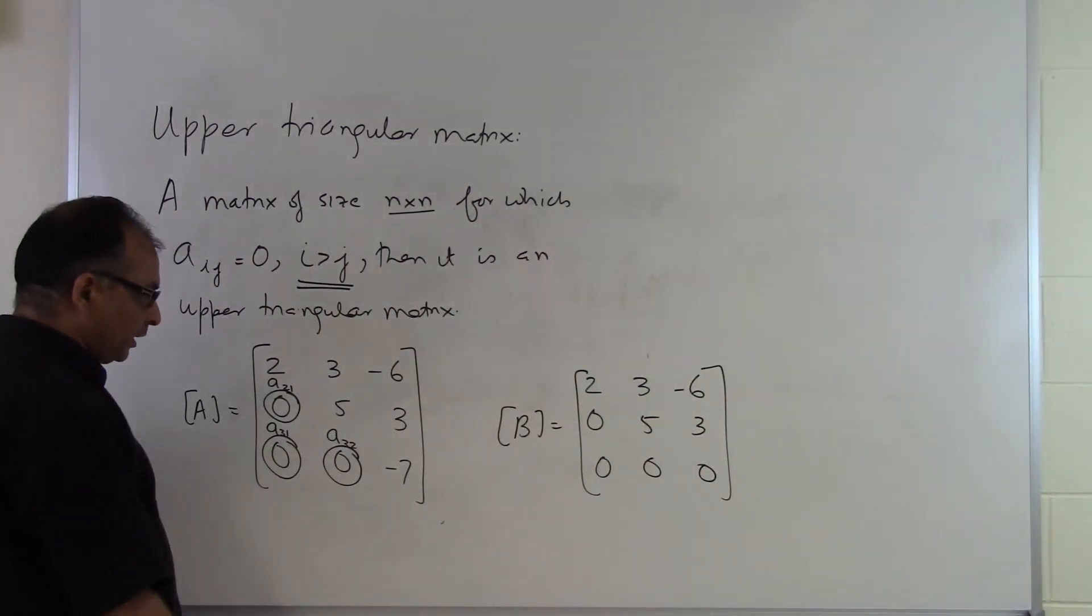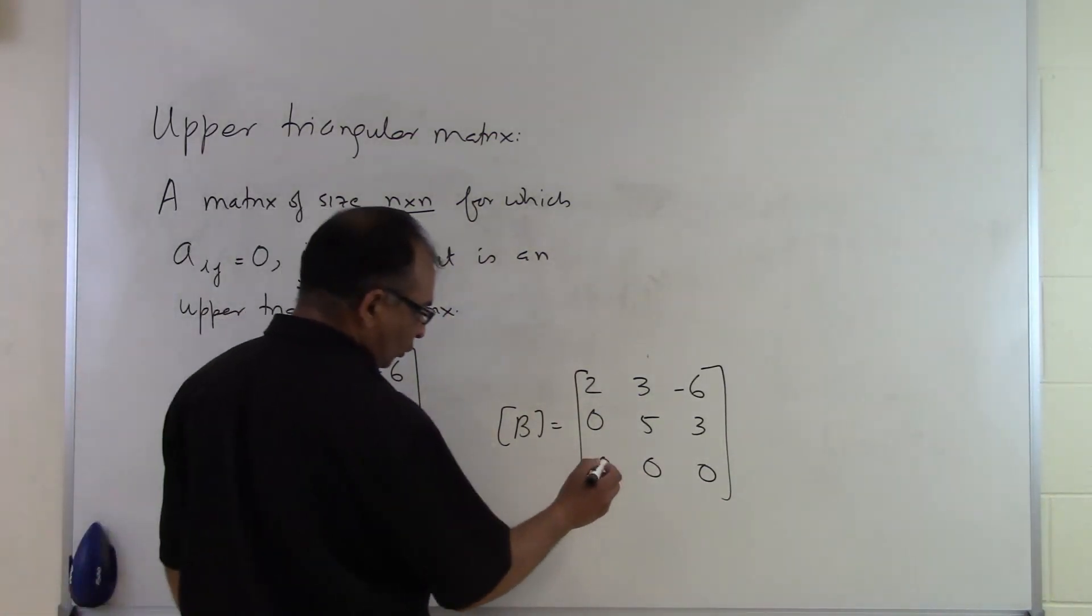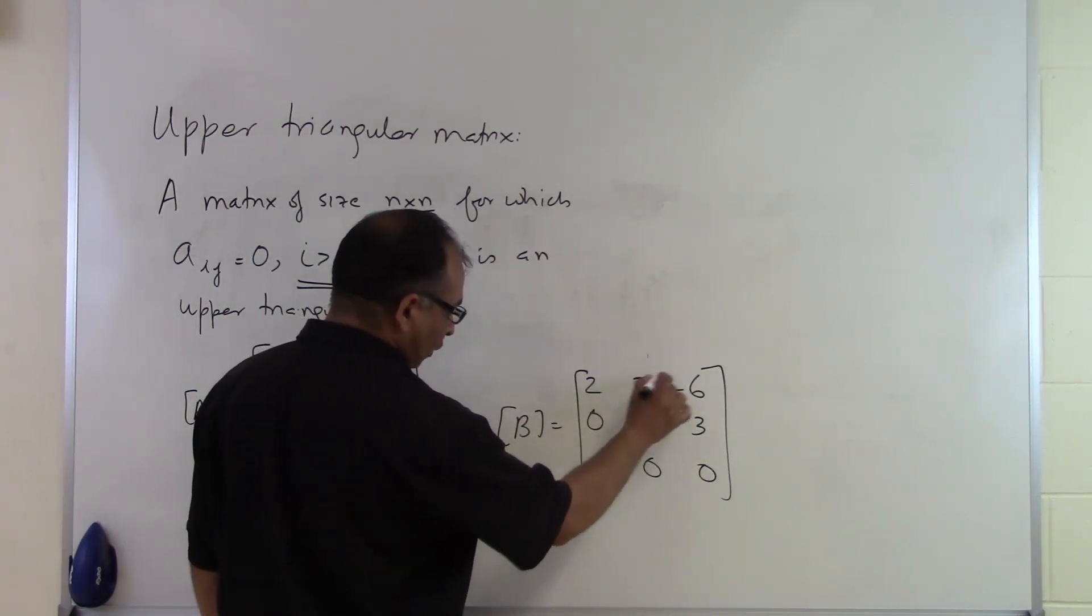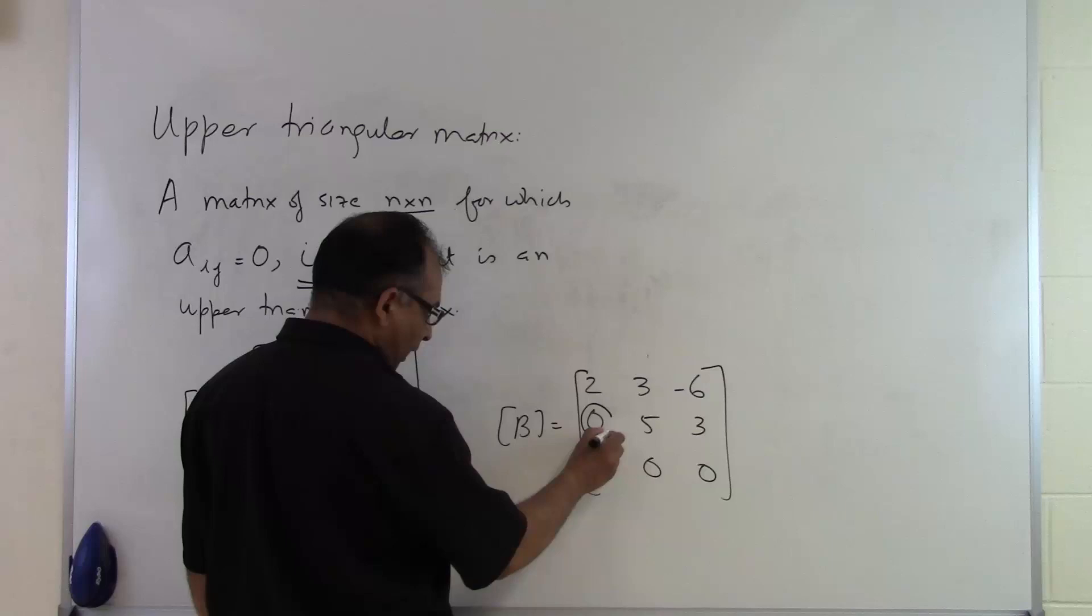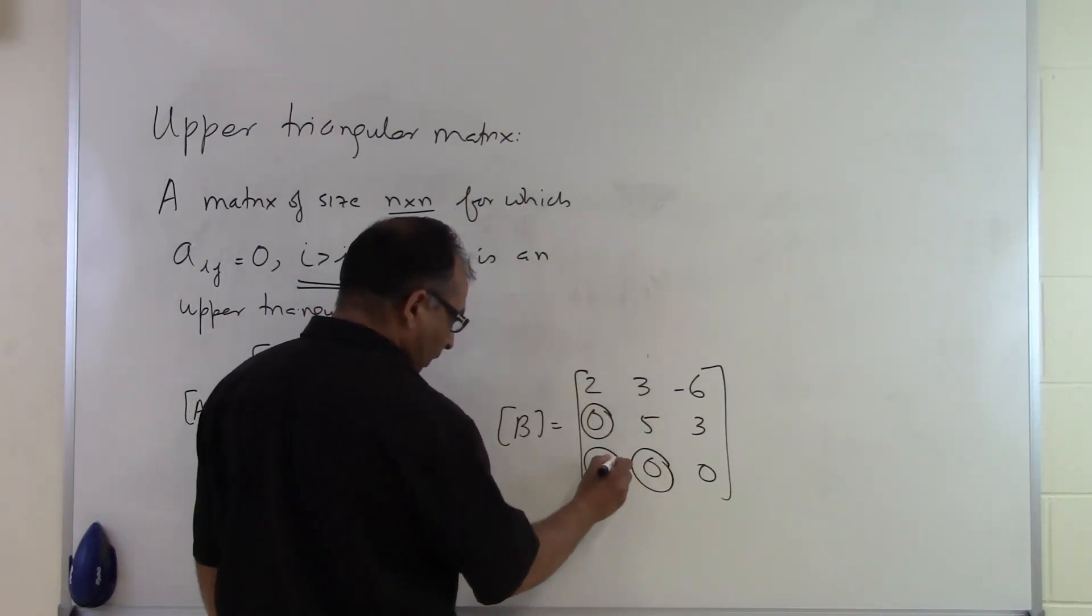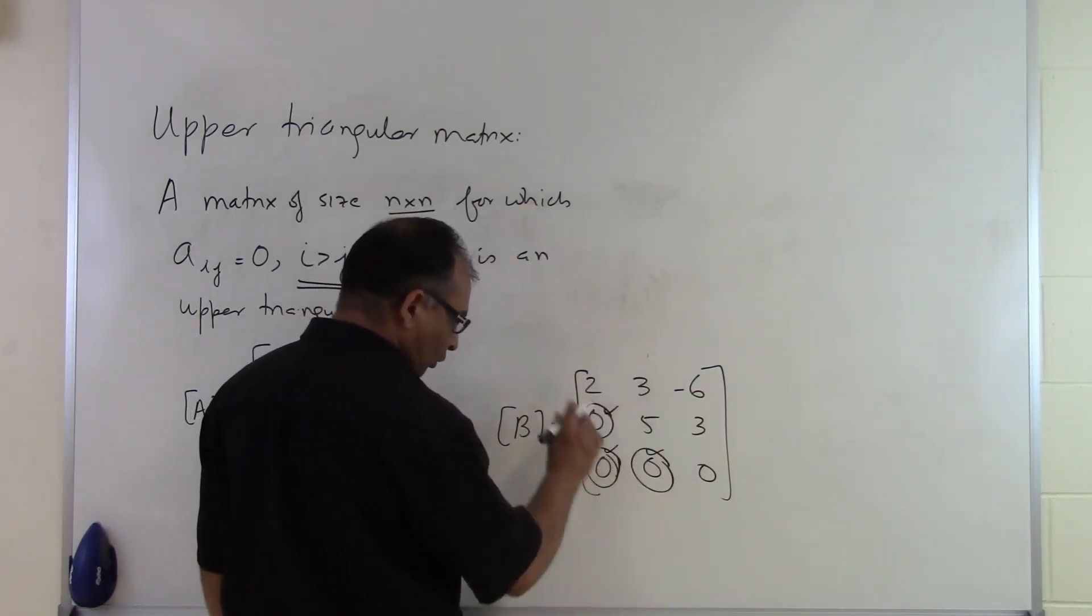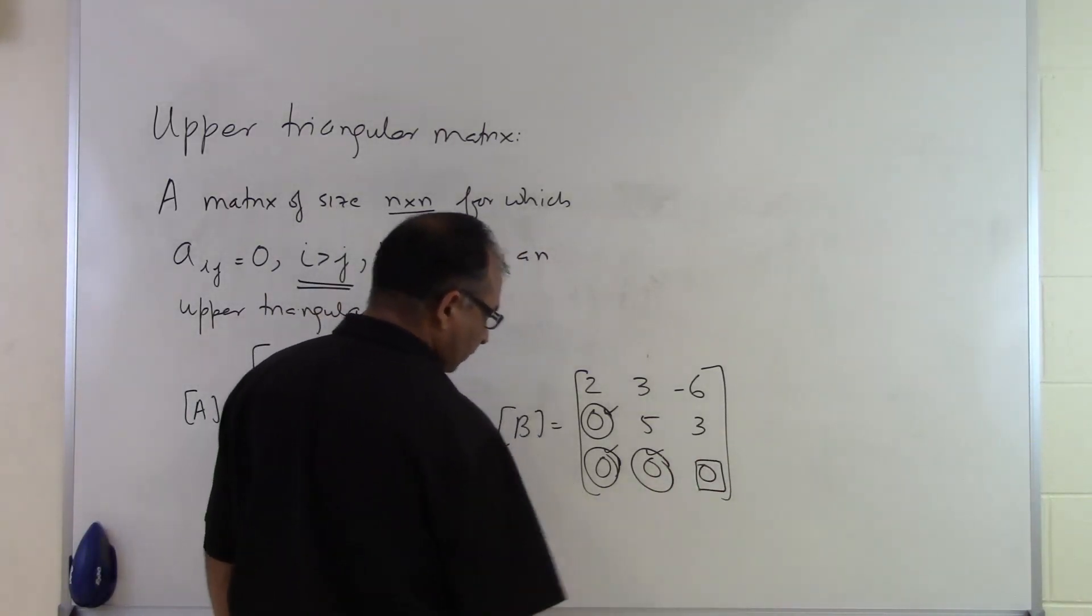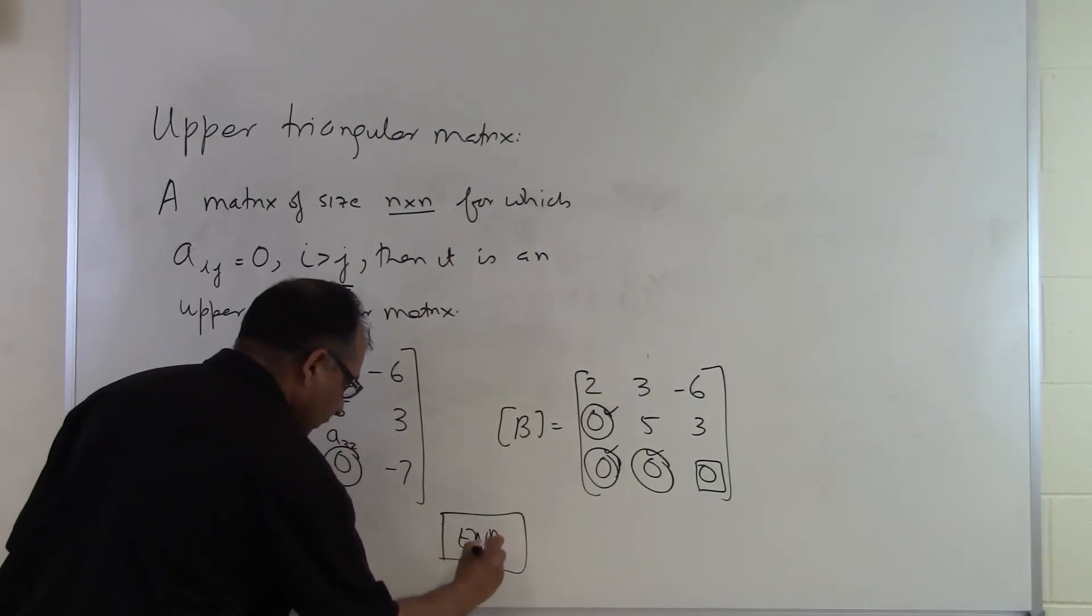So the only difference I have made is this element right here. I made this as 0. And many times students will think that if an element is 0 on the diagonal or above the diagonal, then it's not upper triangular. But the upper triangular nature of the matrix is defined not by what is non-zero, but what is 0, which is below the diagonal. So since these elements are 0, this is an upper triangular matrix irrespective of this element being 0. And that's the end of this segment.